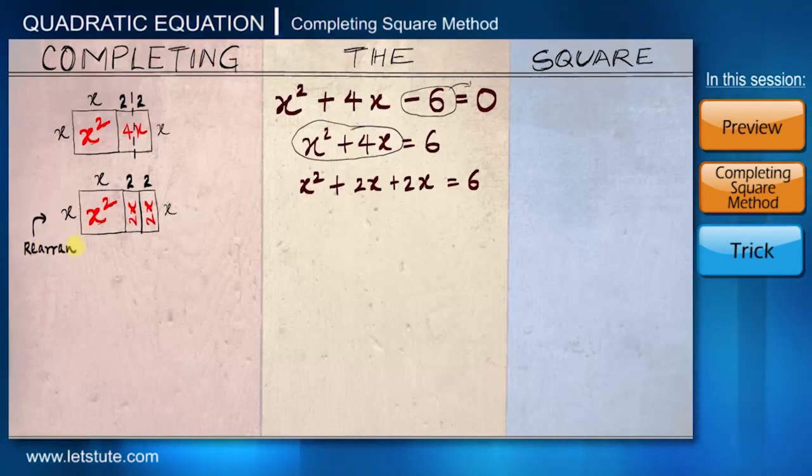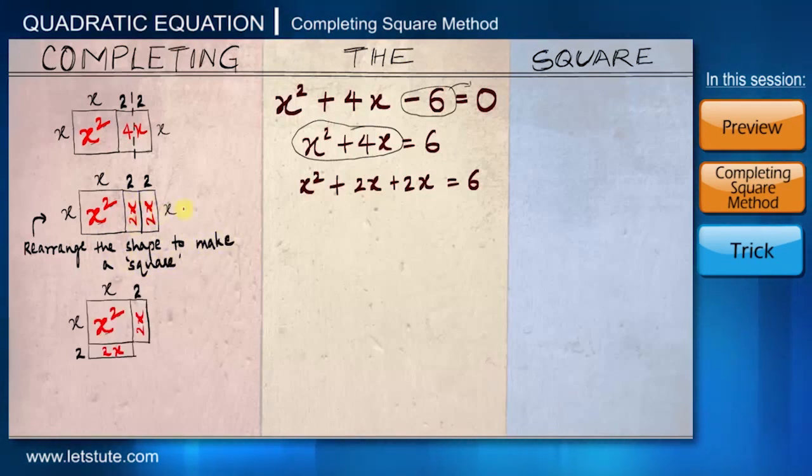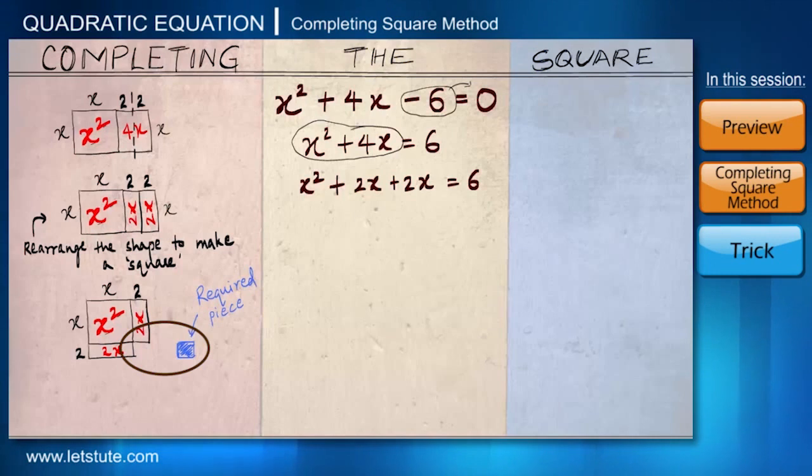Now, in order to make it a square, what I am going to do is rearrange these 2 rectangles. And I am going to bring one of the rectangles below. And what I am getting is a large shape that almost looks like a square. I am saying almost because all we can see is an empty space over here. So we have to accommodate a small square in such a way that length and breadth of that square should be equal to the breadth of these rectangles, that is 2.